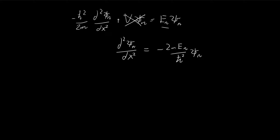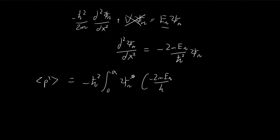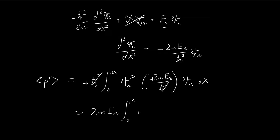We can substitute this into our integral to simplify it. The expected value of p squared equals negative ħ squared, integrated from 0 to a, with the conjugate multiplied by this term. We can pull the constants out, giving 2mEn, and then the conjugate multiplied by the original gives the absolute value squared dx. By normalization, this integral equals 1, so we get 2mEn.